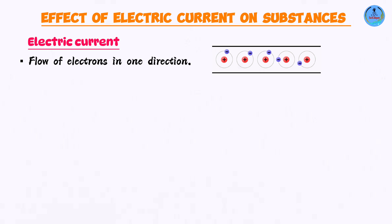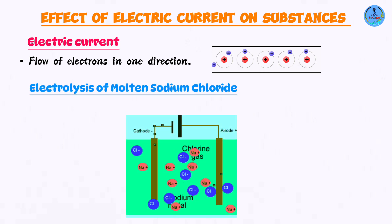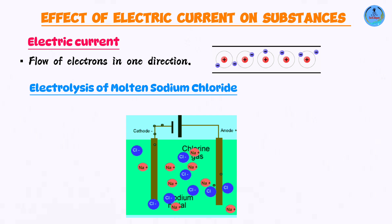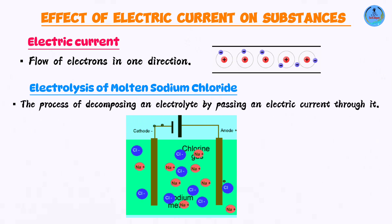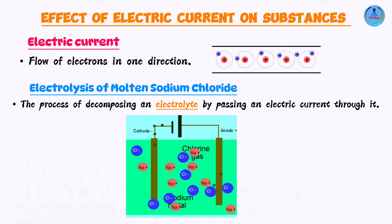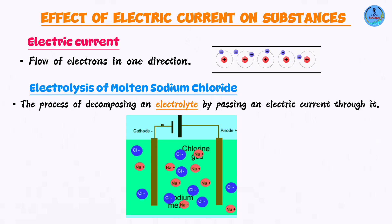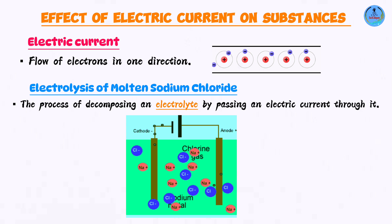A setup such as this is used during electrolysis. Electrolysis is a process whereby you're going to pass an electric current through an electrolyte. An electrolyte is a substance that can conduct an electric current. So in this case, our electrolyte is molten sodium chloride.